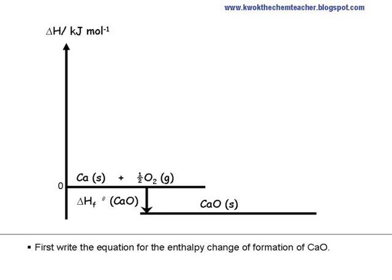First, write the equation for the enthalpy change of formation of calcium oxide. You can assume that it is exothermic. The zero is needed because the enthalpy change of formation of calcium and oxygen elements are taken to be zero.